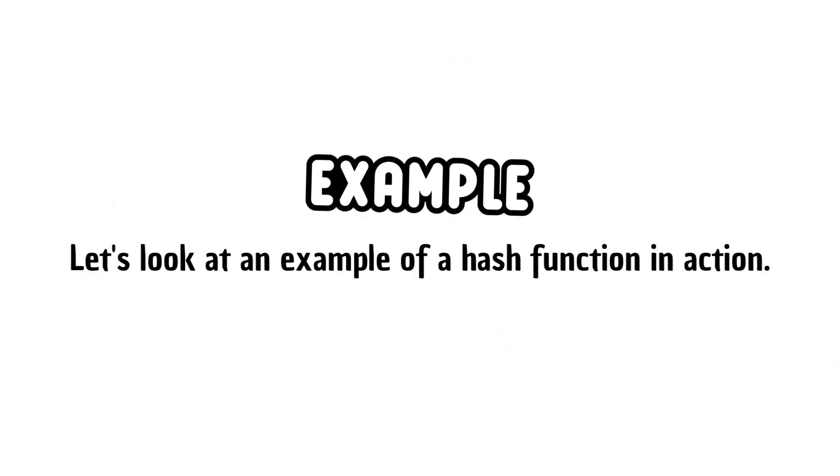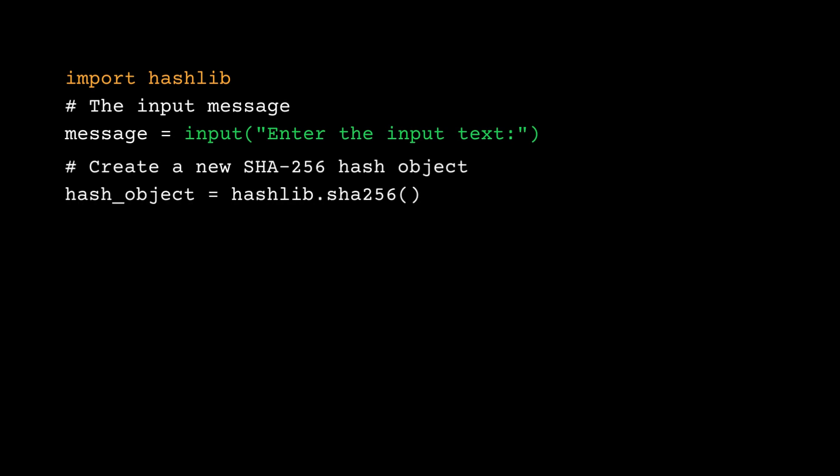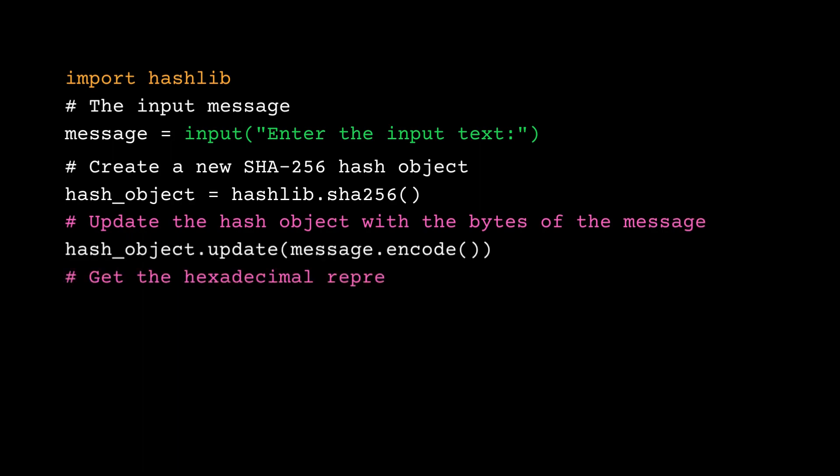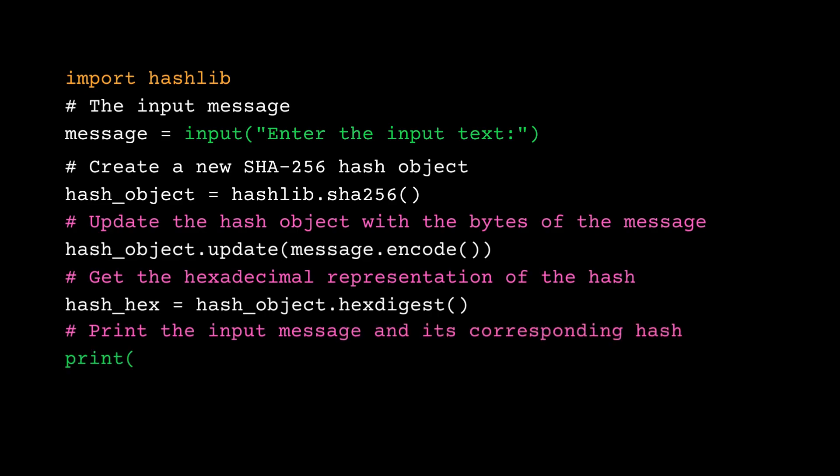Let's look at an example of a hash function in action. Here is a Python script that starts with importing the hashlib library, which provides various cryptographic hash functions. It then takes input for the text message and creates a new SHA-256 hash object. The script then updates the hash object with the bytes of the message and gets the hexadecimal representation of the hash. The script then prints the input message and its corresponding hash.